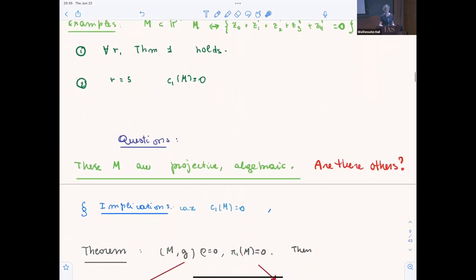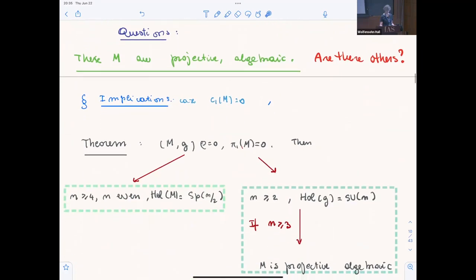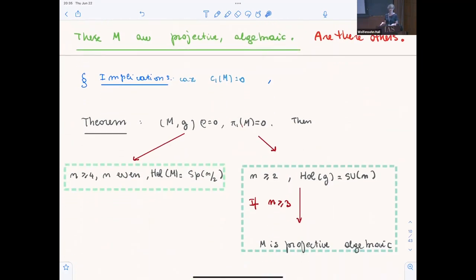A particular example: a hypersurface in P4, we can take the Fermat, just all the powers in P4. That's a threefold. For R equals five, we have C1 equals zero. I gave an example that are projective algebraic. We might want to ask: are all such M which satisfy Calabi-Yau projective algebraic?